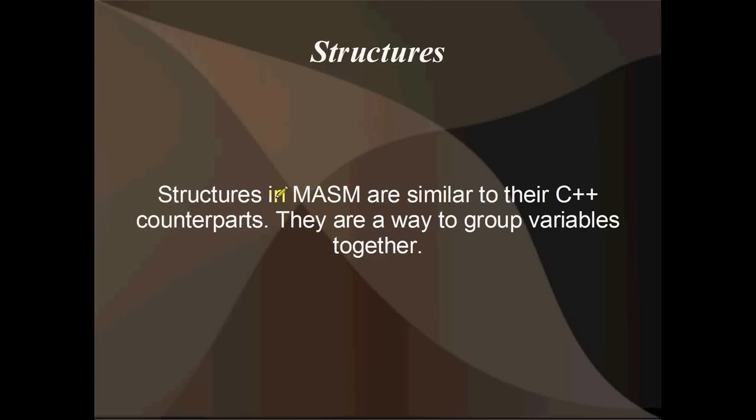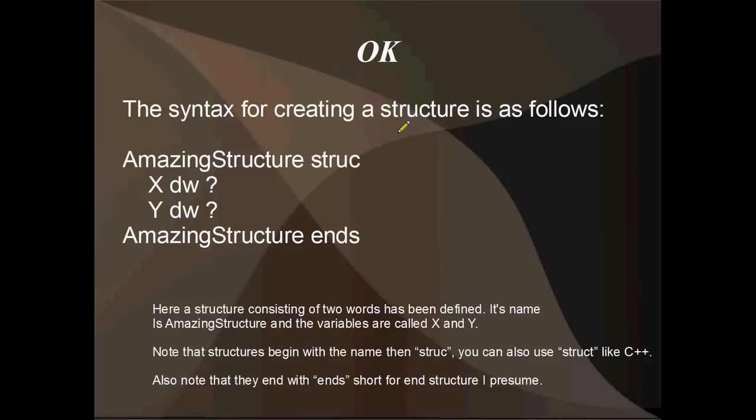Okay, so pretty much structures in MASM are the same as their C++ counterparts. They're just a way to group variables together, and the syntax for creating a structure is pretty basic. Here's an example: AmazingStructure struc, X dw ?, Y dw ?, and that's uninitialized also.